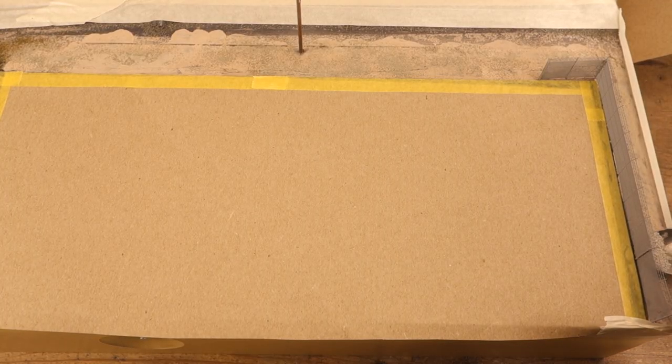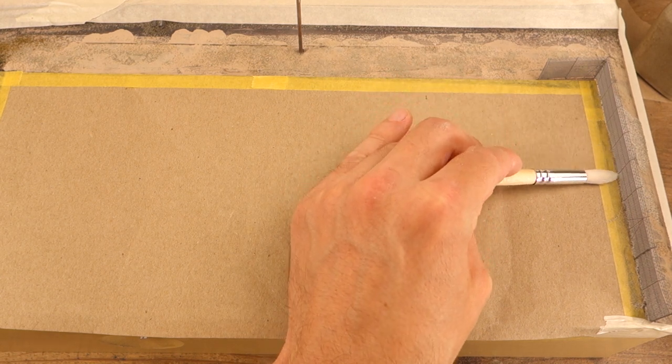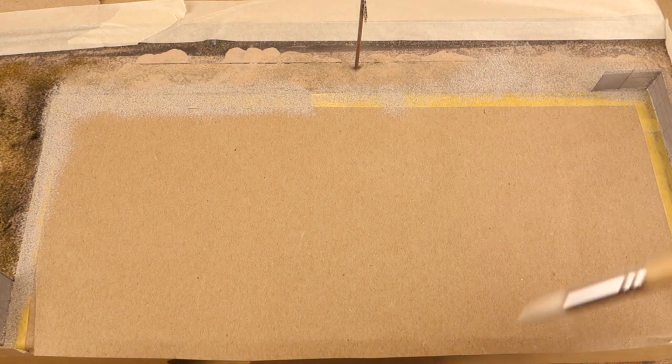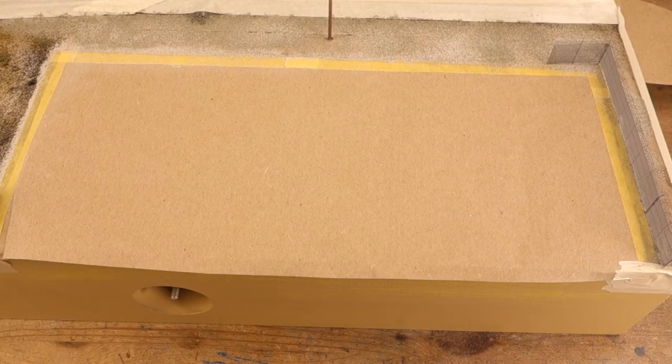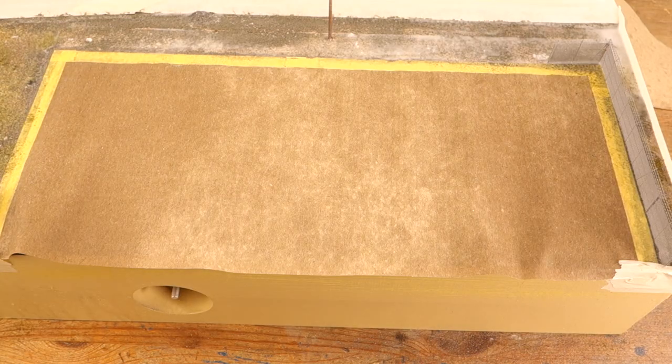First I put down the gravel around the asphalt lot and then wet it down the area before applying the diluted white glue. Then I sprinkled down fine ground foam until I liked the general look and added some coarse ground foam for variety.